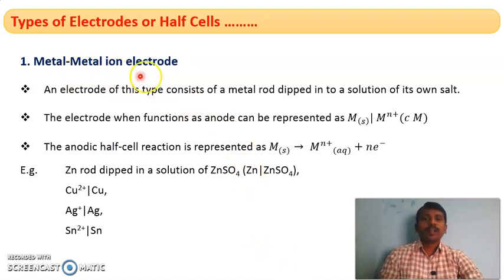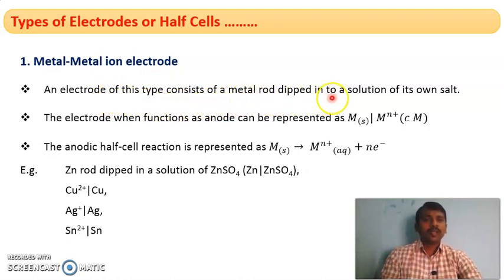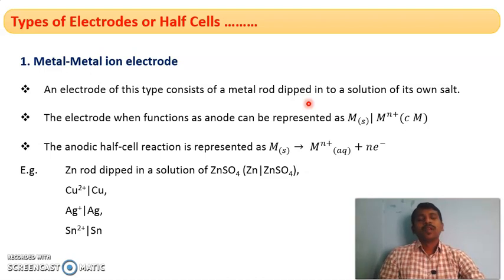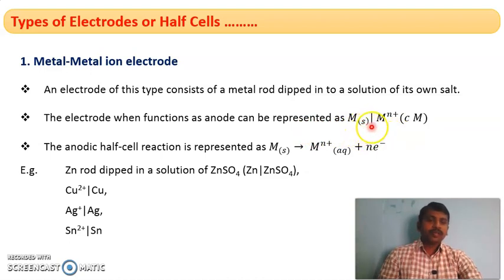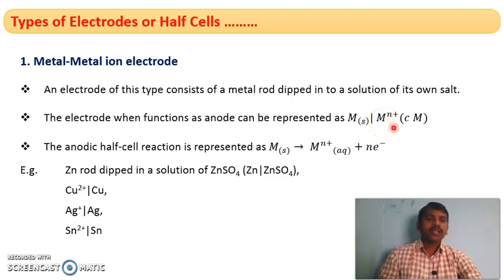First, the metal/metal ion electrode. This is a basic type of electrode or half cell. In this electrode, we have a metal rod dipped in a solution of its own salt. We commonly use zinc electrode and copper electrode, which belong to this type. The common representation is M(s) | Mⁿ⁺(C), where M indicates the metal rod in solid state dipped in electrolyte containing its own ions Mⁿ⁺ at concentration C moles.